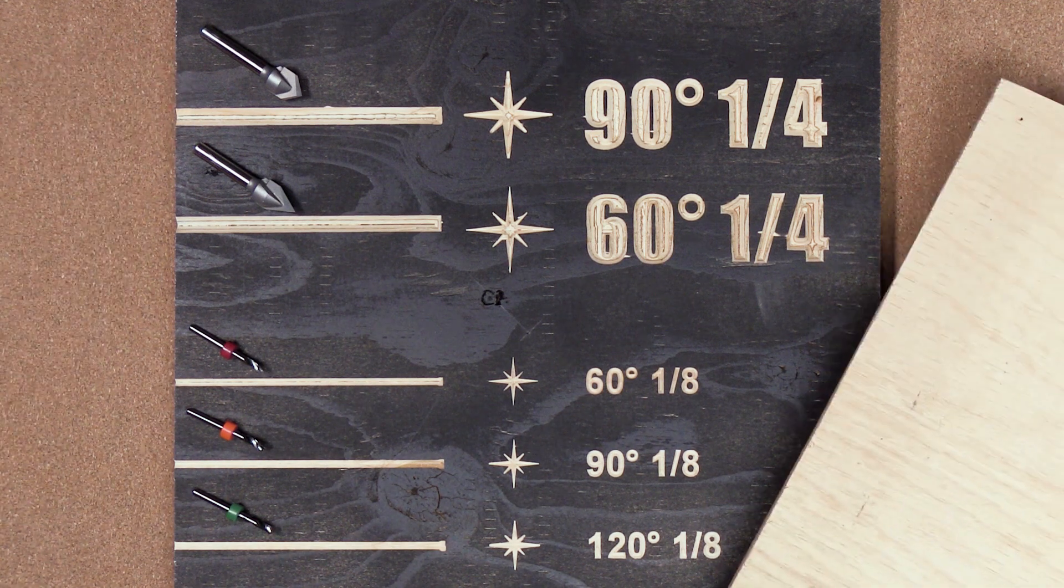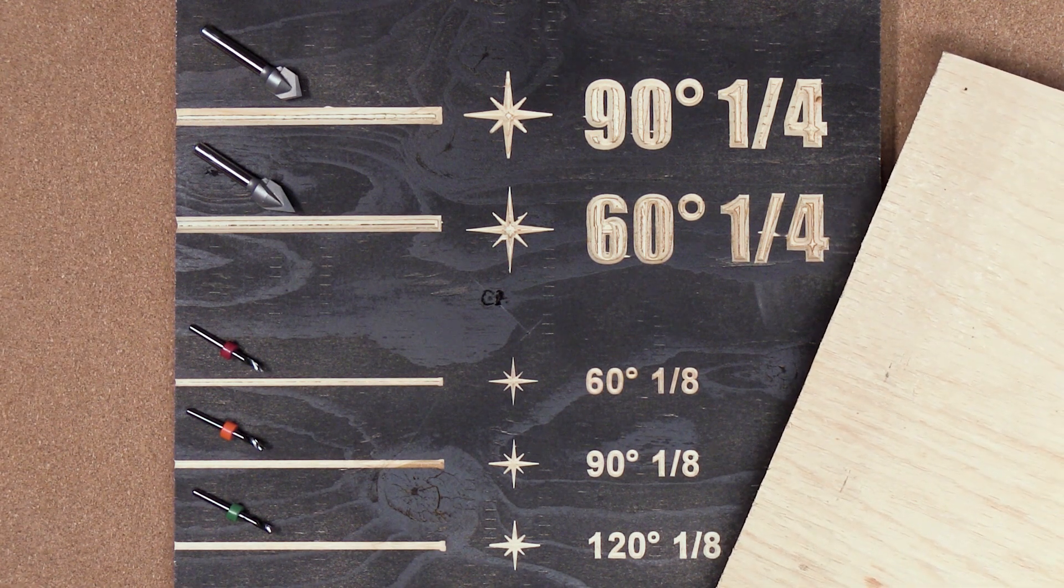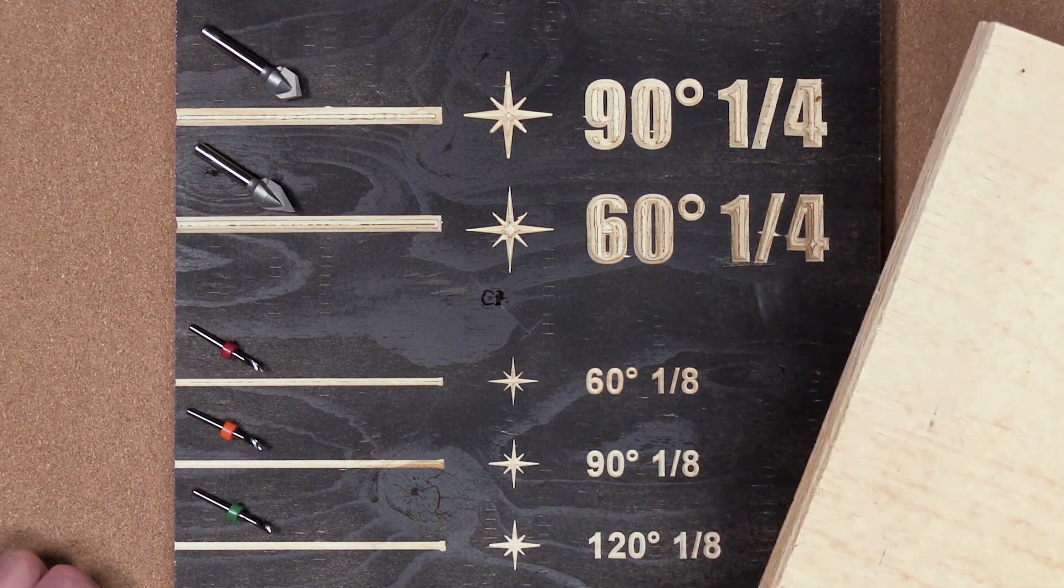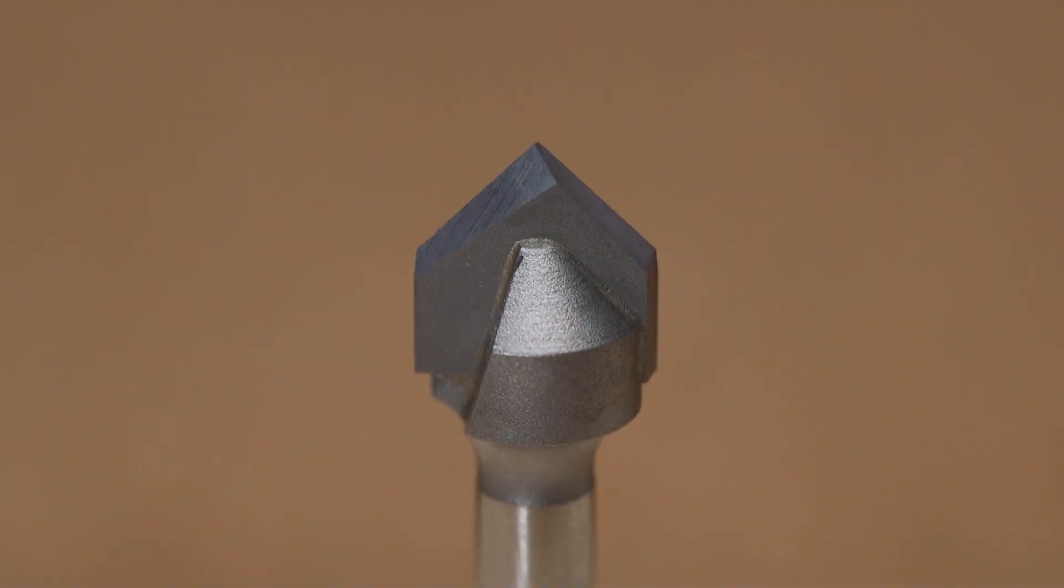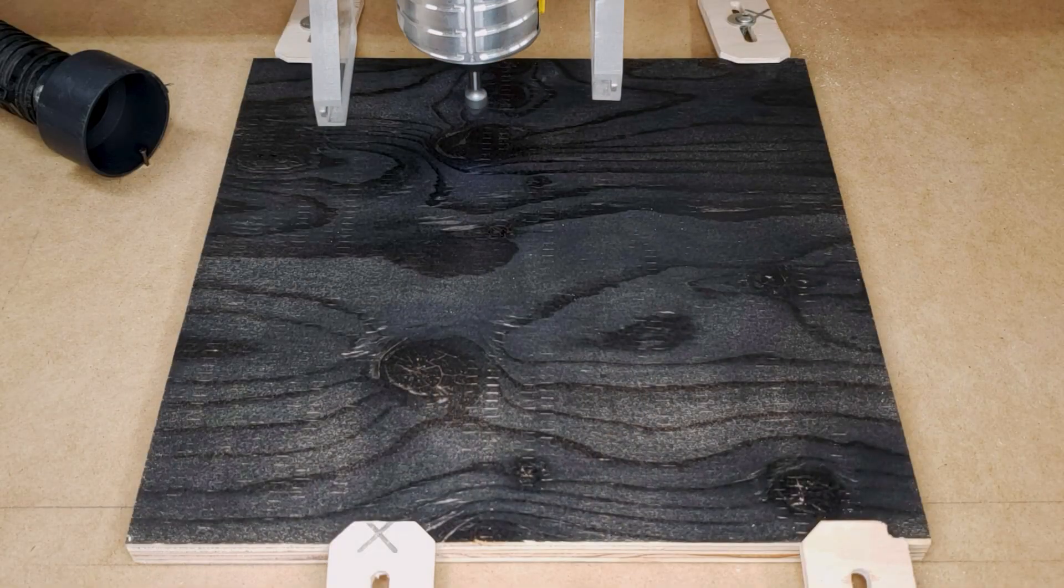The material I'll be cutting today is just some construction grade plywood that I painted black. Let's have a look at this 90 degrees quarter inch shaft, half inch head V-bit first.